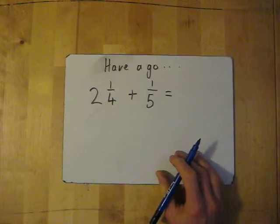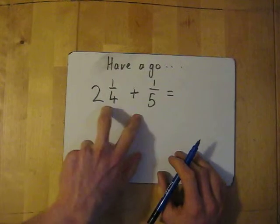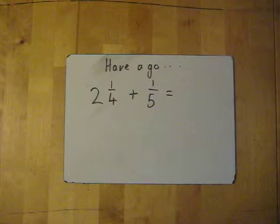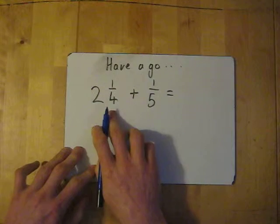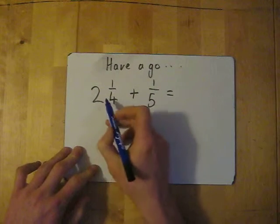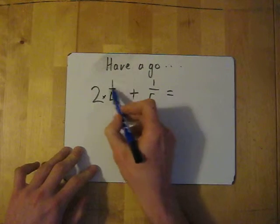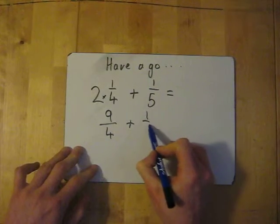Now have a go yourself. We've got two and a quarter, add one fifth. Remember: convert it to an improper fraction, find the common multiple, then add. Pause this if you want to try it. So: multiply and add — two times four gives me eight, then add the one gives nine. So it's nine over four, add one fifth.